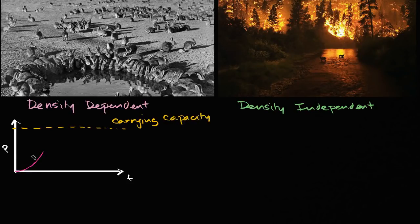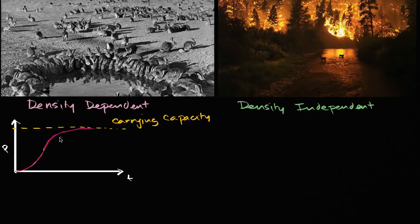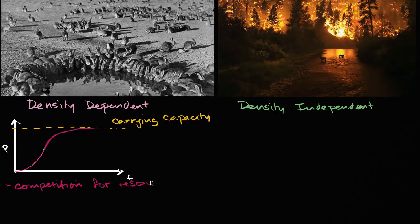As the density of the rabbits in a certain area gets higher and higher, the density dependent limiting factors start to play. What could be some of these density dependent limiting factors that keep the population from going dramatically above the carrying capacity? Well, the most obvious one could be competition for resources — competition for food resources.